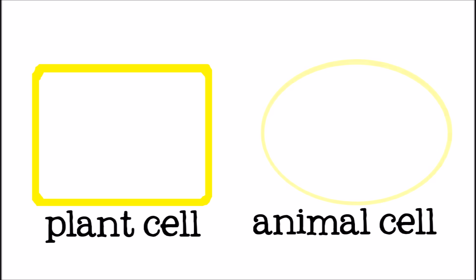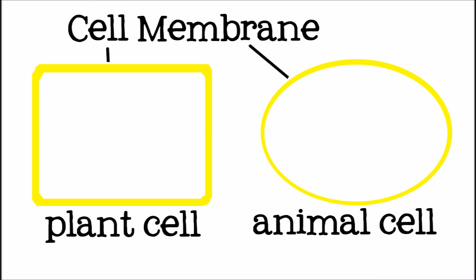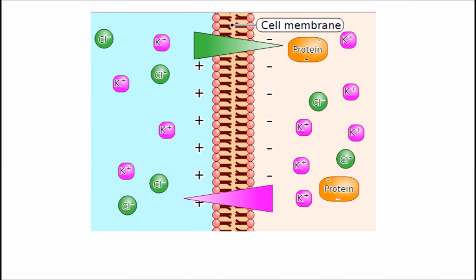Both plant cells and animal cells are surrounded by a cell membrane. The cell membrane is a thin, flexible layer that separates the inside of the cell from the outside of the cell. It protects the cell and controls what is allowed to go in, food, and come out, waste.